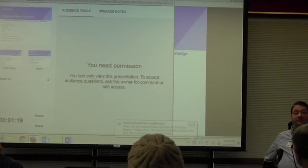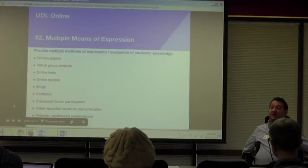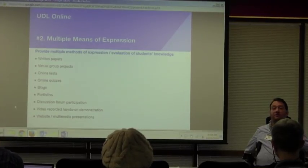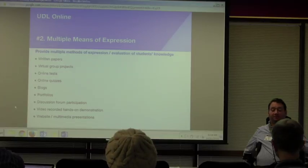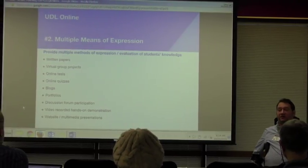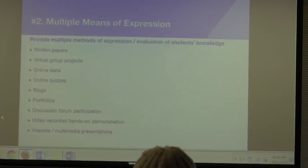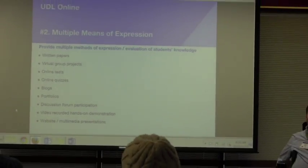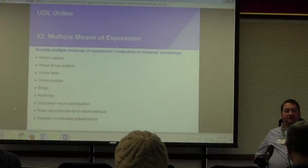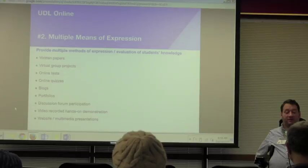The first principle — multiple means of representation — is the idea that you want to make your content available in multiple formats to your students. Traditionally it's textbook and lecture. But when you use your online spaces, there are some options to really broaden that to be more universal. Some ideas: create a universally designed syllabus online with a photo and maybe even a video introduction of the instructor. You might also give a video tour of the class and what's expected. Make sure your syllabus has very clear instructions about your learning management system and how to use it, and how all the different modules connect to those learning objectives. The idea is that you have multiple pathways for mastering the material.